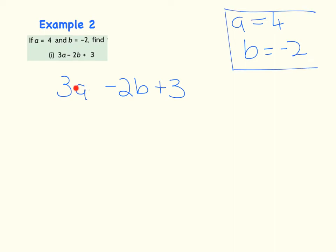So 3a, if a is 4, it's 3 of them, which means it's 3, and I'm going to multiply it by 4. So 3a minus 2b, and b is minus 2, so it's 2 times minus 2 plus 3.